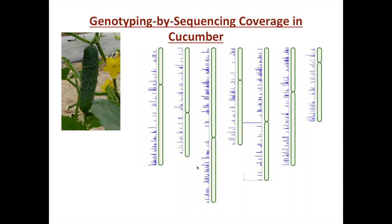Here is an example of the coverage we're getting in cucumber. We have depicted all the nuclear chromosomes of cucumber, and all the blue bars indicate where we have a GBS tag hitting that region, with the height of the bar indicating the number of times we're hitting that region. We have quite good coverage for most of our purposes, and especially where we have sequenced genomes, that allows us to move rather rapidly to the genes.